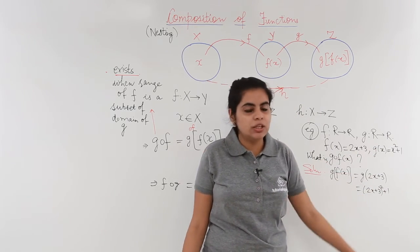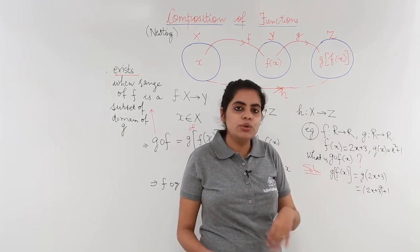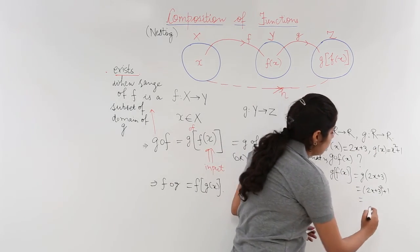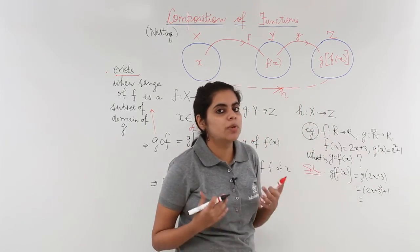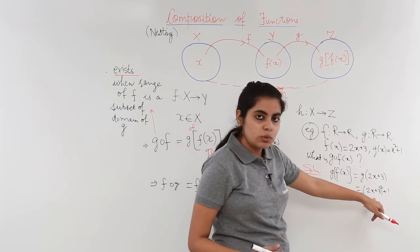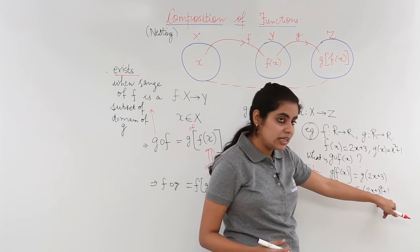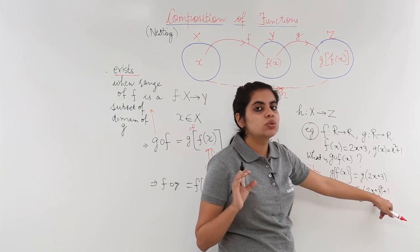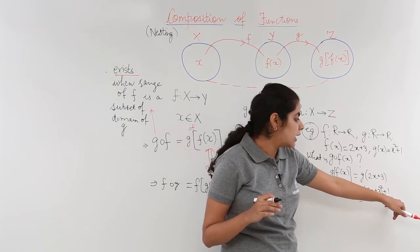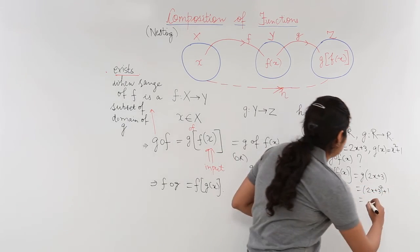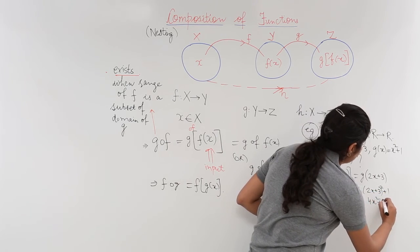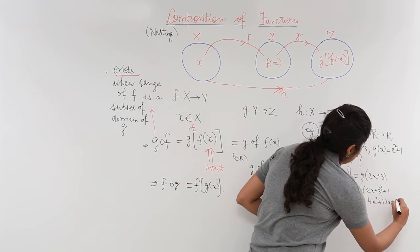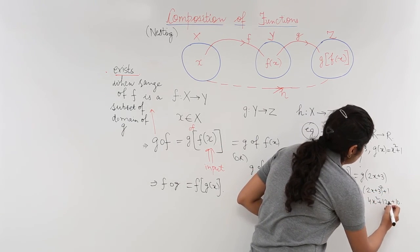Now as simple as that you can leave the question as it is or you can solve it one step more. a + b whole square means a² + b² + 2ab. 4x² + 9 + 2 × 3 × 2x and again + 1. So the answer completely would be 4x² + 12x + 10. This is the answer to this problem.